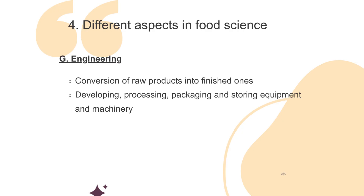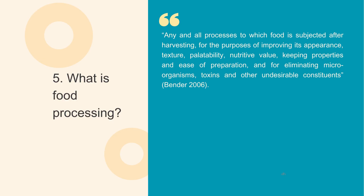The final aspect is food engineering. It involves the conversion of raw products into finished ones, from developing, processing, packaging and storing equipment and machinery. It also addresses food processing and food technology. Food processing is a field closely related to food science, defined as any and all processes to which food is subjected after harvesting, for the purposes of improving its appearance, texture, palatability, nutritive value, keeping properties and ease of preparation, and for eliminating microorganisms, toxins and other undesirable constituents.